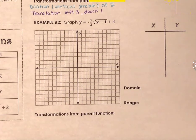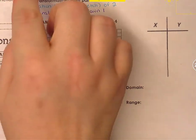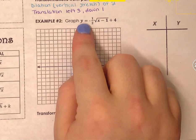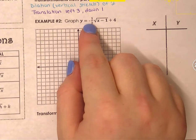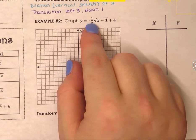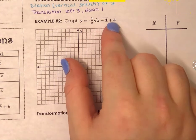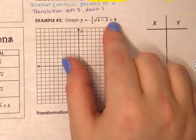This video is on example 2 of graphing radical functions. I'm going to graph y equals negative 1 half square root of x minus 1, plus 4.